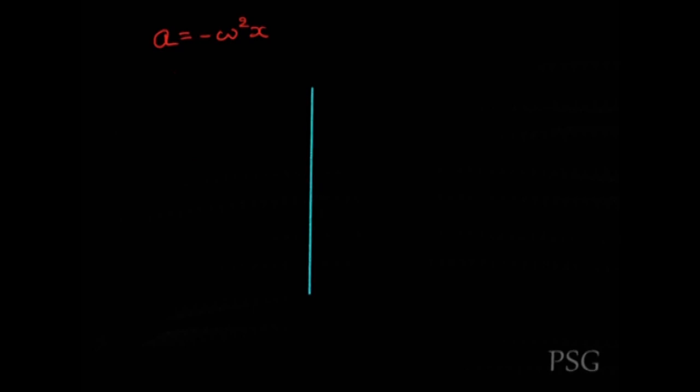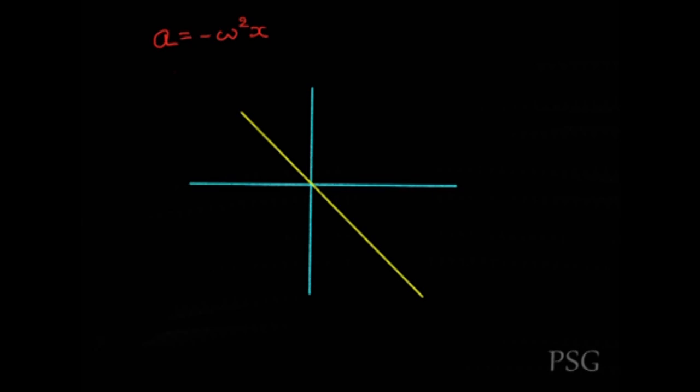For a plot of acceleration versus displacement: a = −ω²x is a linear function of x. This corresponds to a straight line equation with zero intercept and slope of −ω². The graph is a straight line passing through the origin with negative slope, where the slope equals −ω² and the intercept is zero.